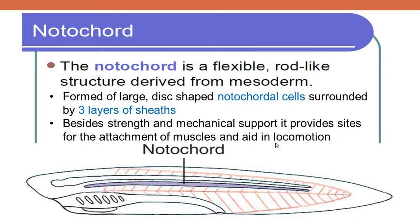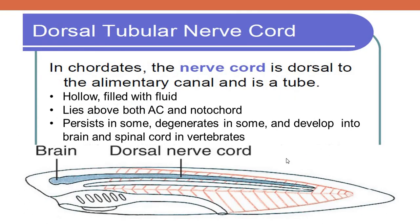Our endoskeleton consists of bones and some cartilages. Our bones have the function of providing us strength, mechanical support, and sites for the attachment of muscles. Similarly, the notochord is the one and only skeletal structure inside the body of some organisms, providing strength, mechanical support, and sites for the attachment of muscles. It also aids in locomotion.